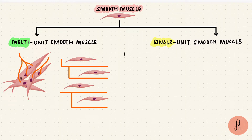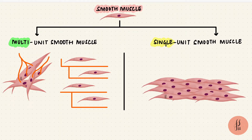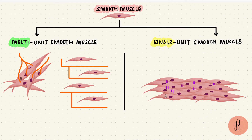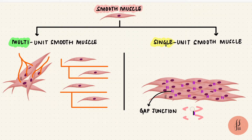Single unit smooth muscles, on the other hand, work as one unit. These cells are in contact with each other at different points, such that when one contracts, they all do, and they work together by using things like gap junctions. Gap junctions connect the cells and help ions pass through, ensuring that they all contract together, like a syncytium. That's why single unit smooth muscles are also called syncytial smooth muscles.